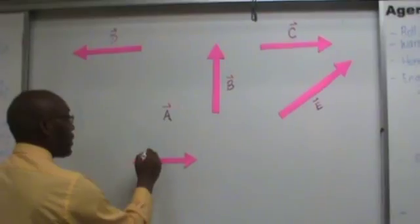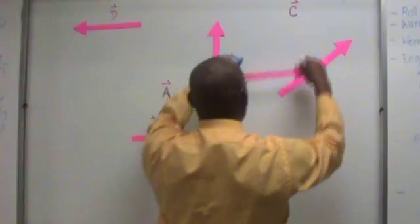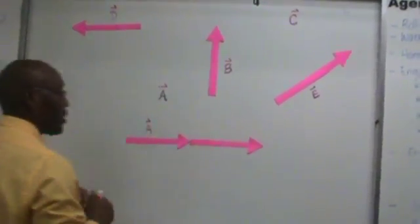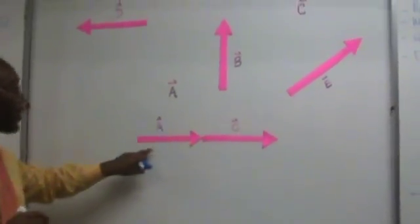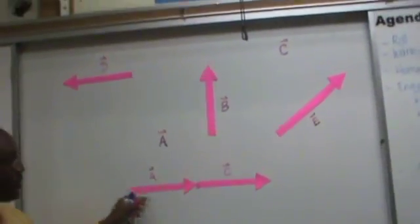Let's move this down a little bit. This is A, and here is C over here. Let's slide it down, pointing in the same direction. Place the tail of C at the head of A. There we have it, head to tail.